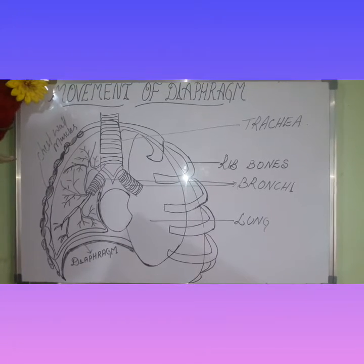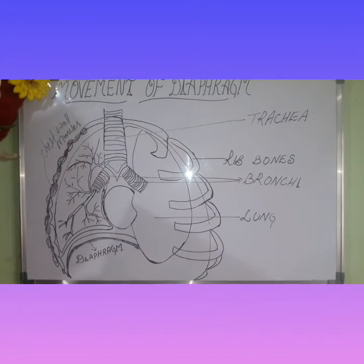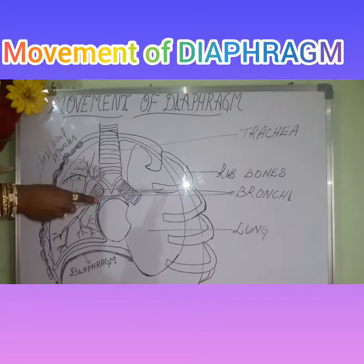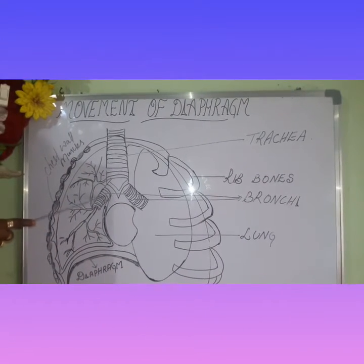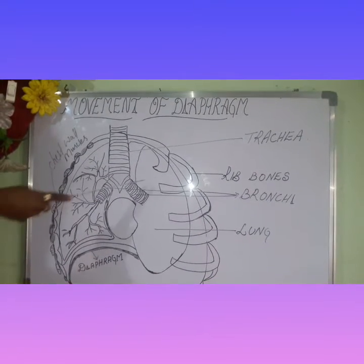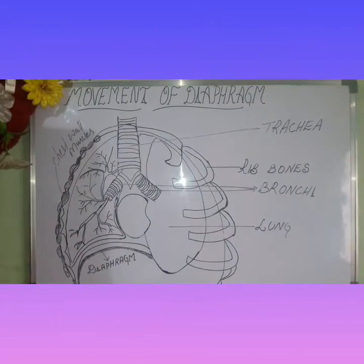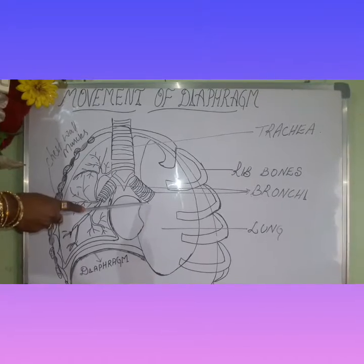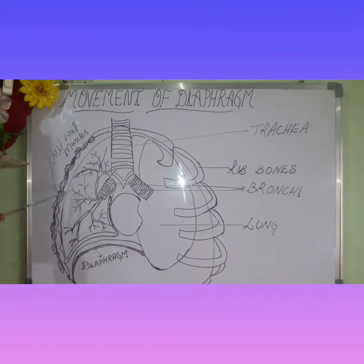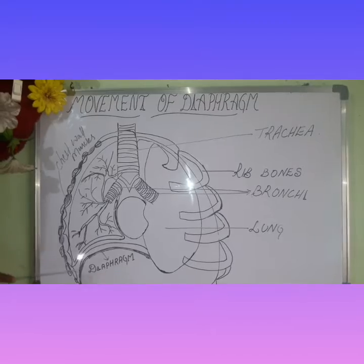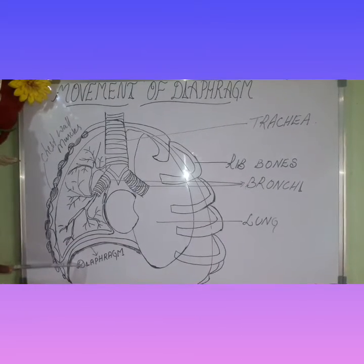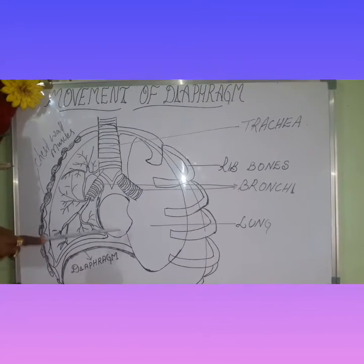The chest wall is made up of ribs, muscles, and skin. The ribs are attached at an angle to the spine. If you think of the chest cavity as a room, the lungs themselves cannot draw in air nor push it out. Instead, the chest wall muscles and another flexible flattened muscle called the diaphragm help the lungs in moving air in and out of them.